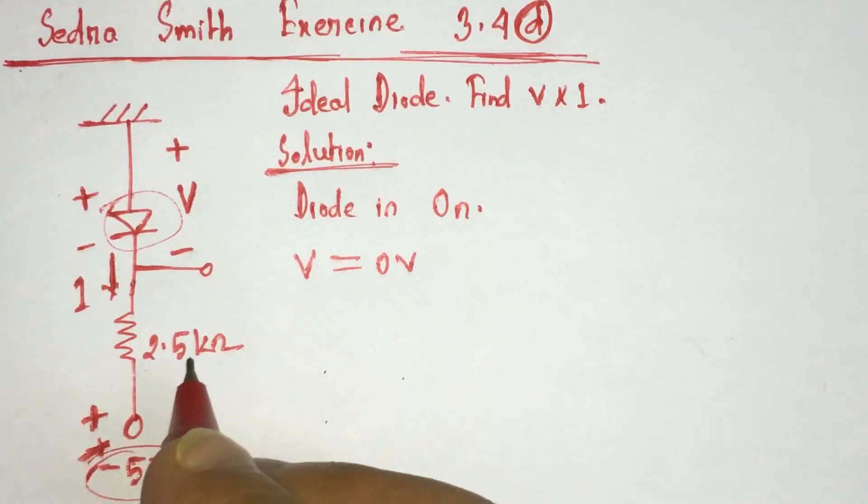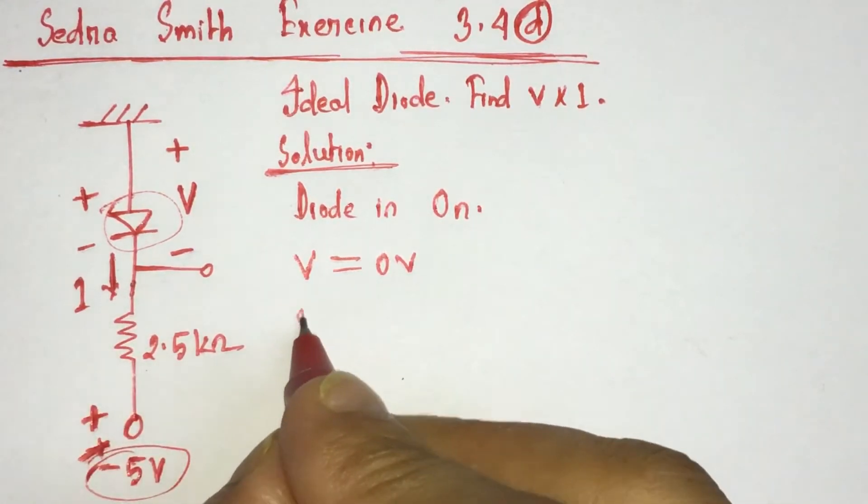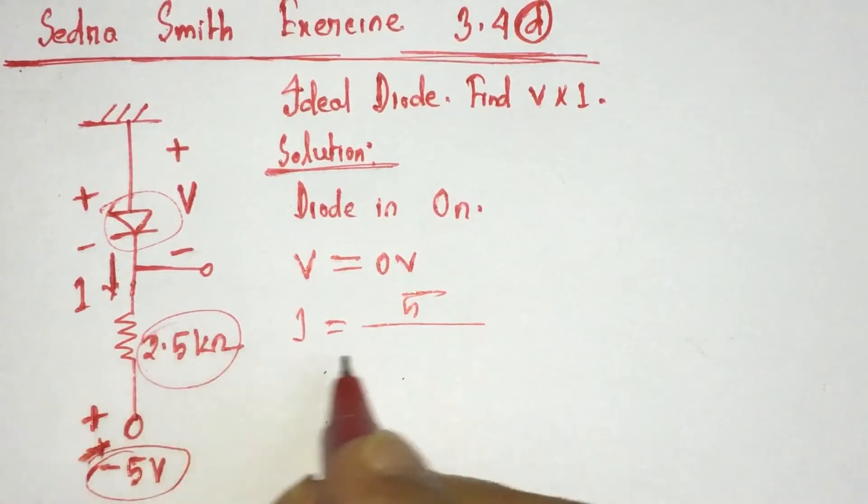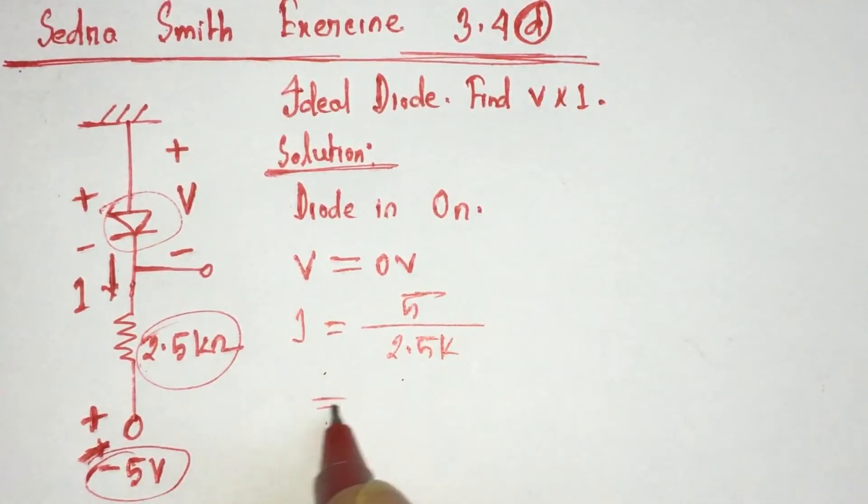Now current flowing through this diode is I equals 5 divided by this resistance, 2.5 kilo ohm. That is 2 milliampere.